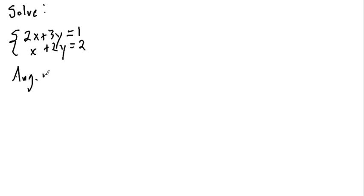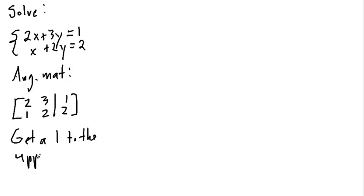So what is the augmented matrix? It's 2, 3, 1, 2 because the coefficient on x here is 1. Over here I've got 1, 2. And so my first thing I want to do is I want to get a 1 in the upper left corner. I could divide the top by 2, but then I would have 1, 3 halves, and 1 half. So probably the best thing to do is to use the row operation R1 swaps with R2.